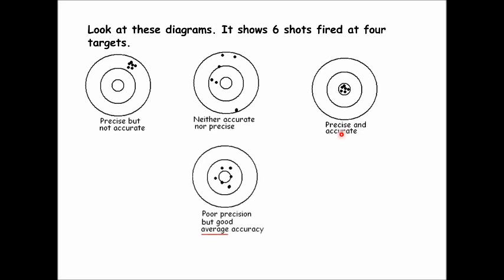The last target shows poor precision but good average accuracy. This is what you shoot for when making measurements in science. You never make just one measurement — you roll the ball down the ramp many times: 5, 10, 20 — the more the better. When you find the average, you hopefully increase your average accuracy. Remember: to increase average accuracy, always make more than one measurement and average them together.